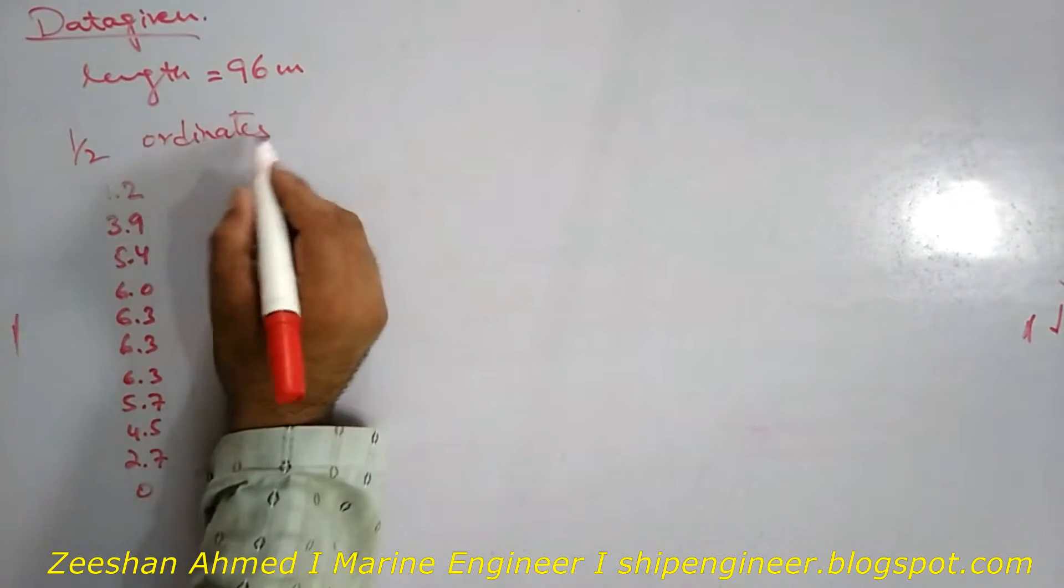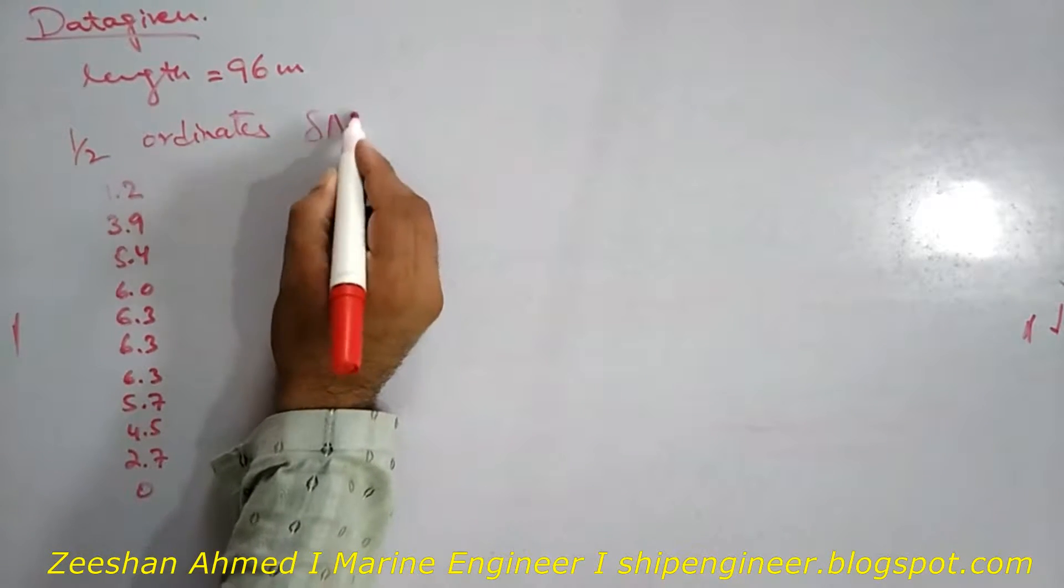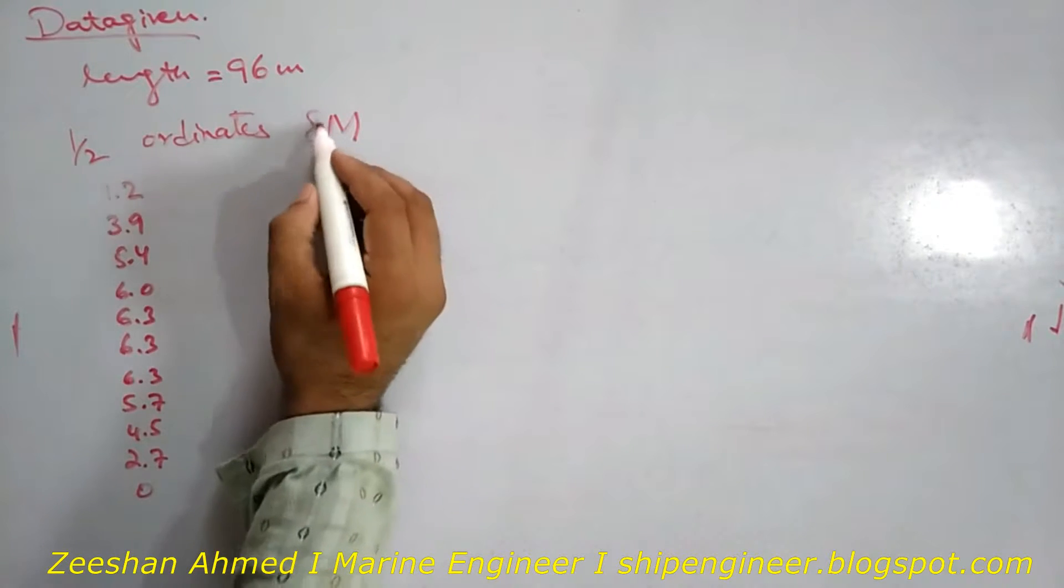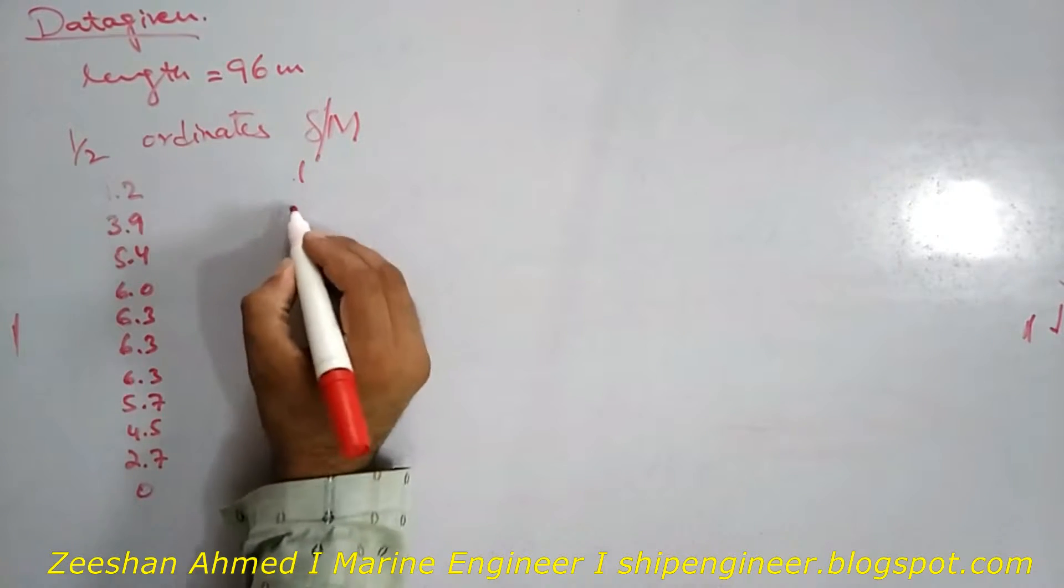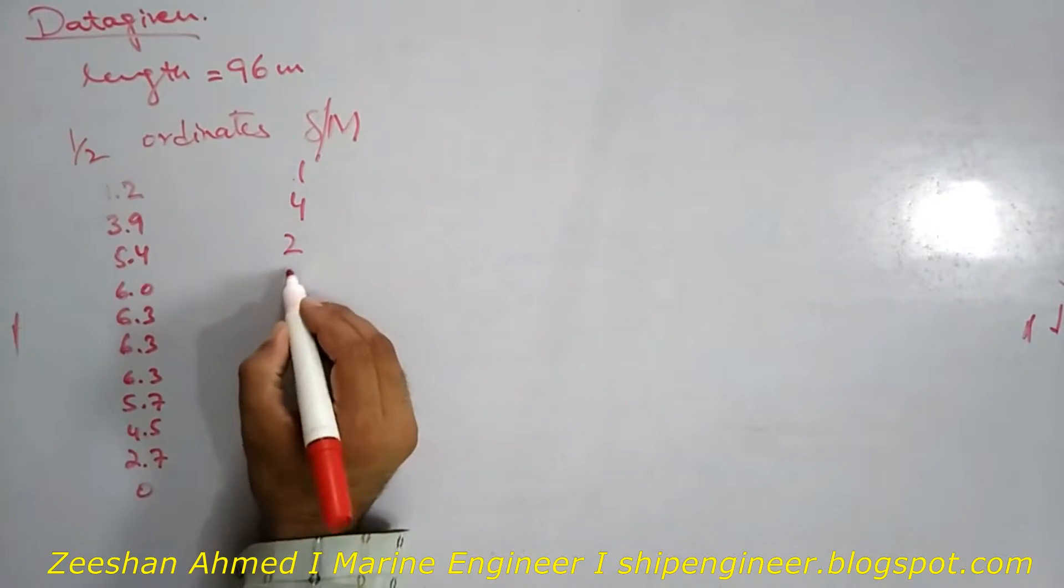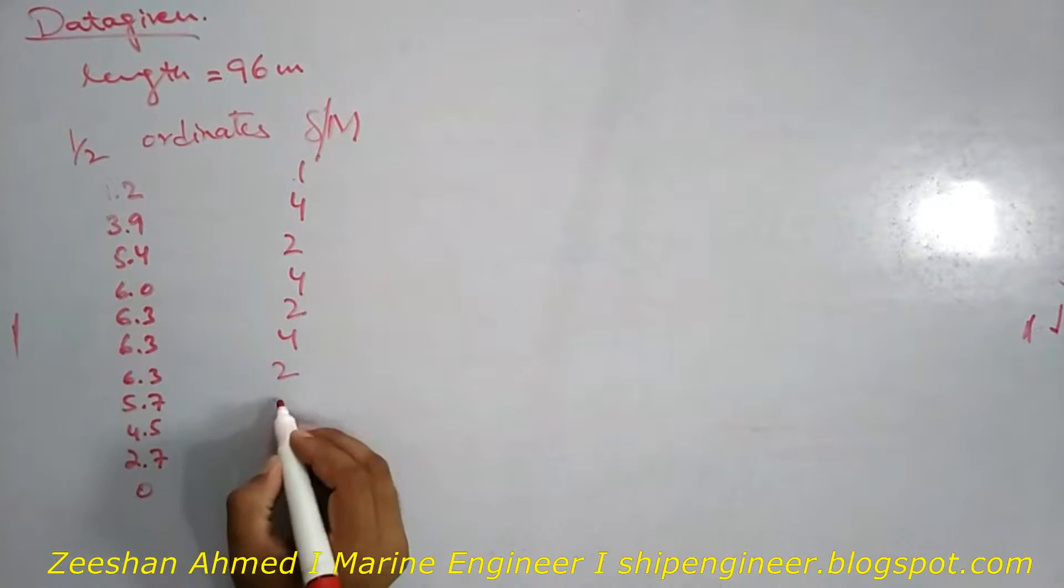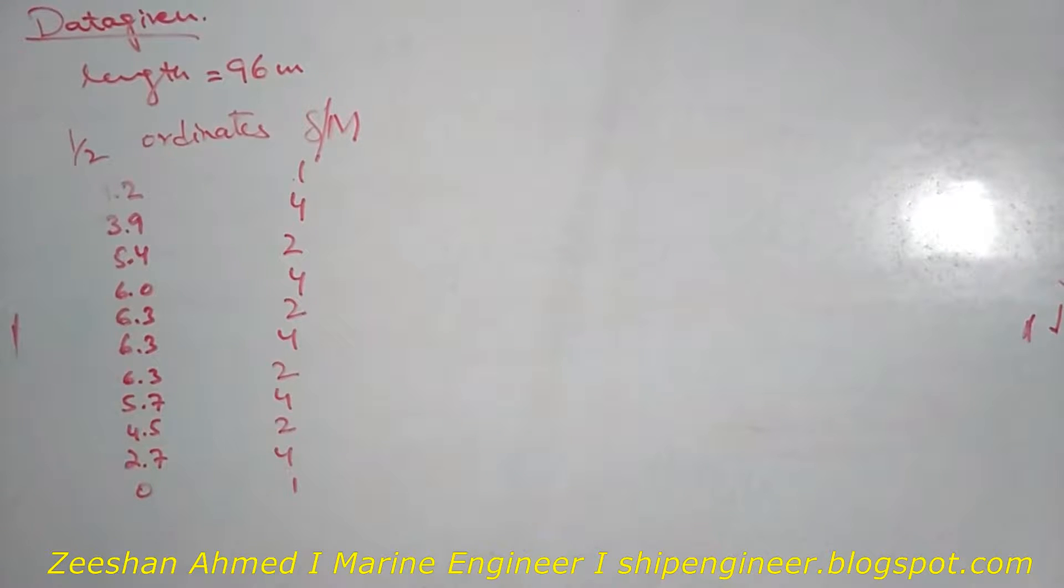The Simpson's multipliers are: 1, 4, 2, 4, 2, 4, 2, 4, 2, 4, 1.